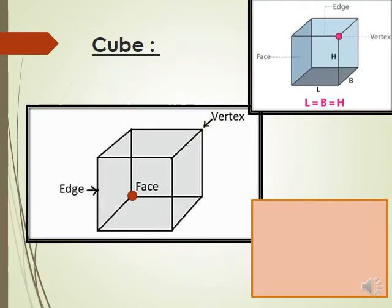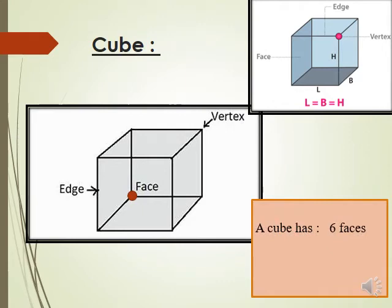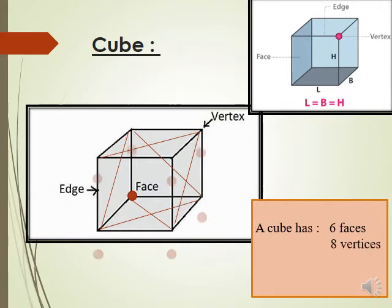The first 3D shape is the cube. A cube has six faces, eight vertices, and twelve edges.